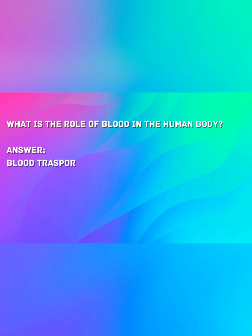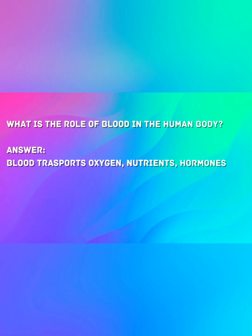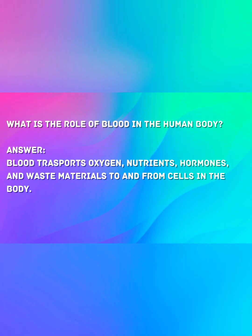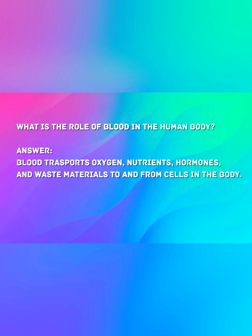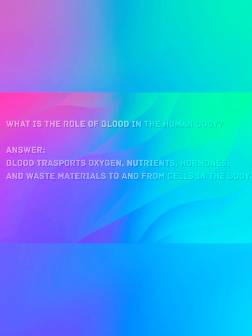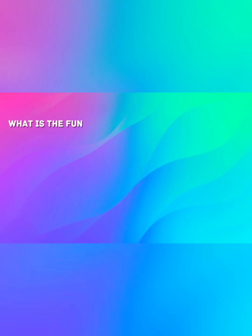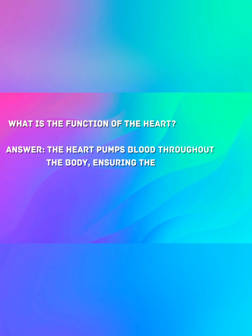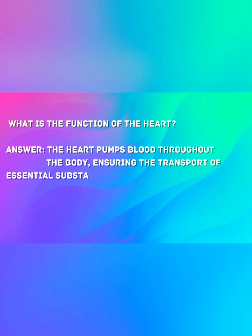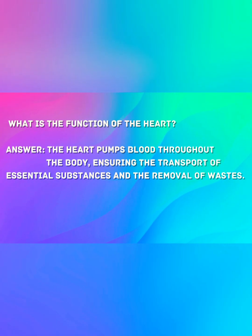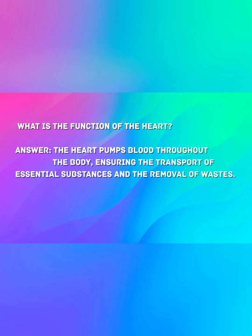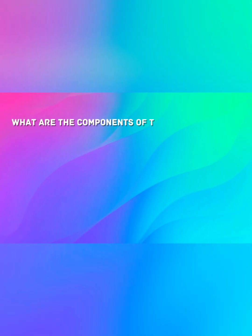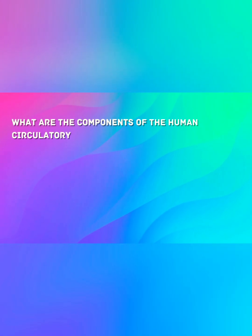What is the role of blood in the human body? Blood transports oxygen, nutrients, hormones, and waste materials to and from cells in the body. What is the function of the heart? The heart pumps blood throughout the body, ensuring the transport of essential substances and the removal of wastes.